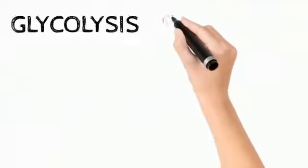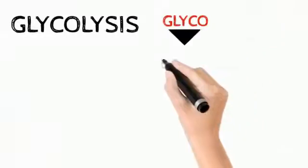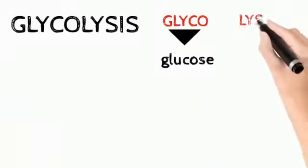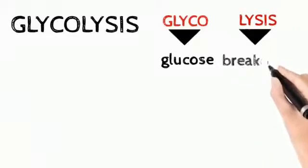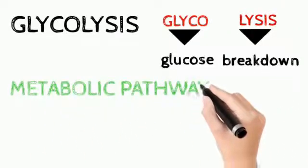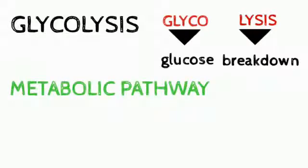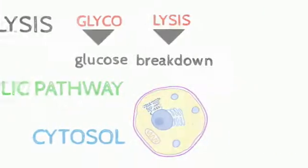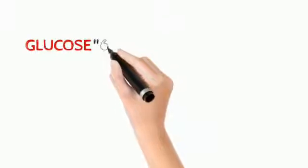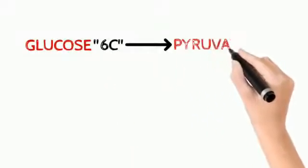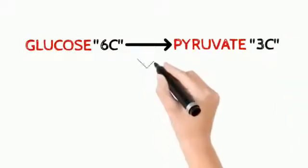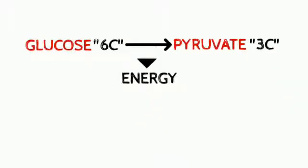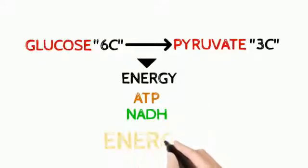Today we will study about the process of glycolysis. Glycolysis is made up of two words: glyco, representing glucose, and lysis, which means breakdown. Glycolysis is a metabolic process that involves the systematic breakdown of glucose to produce energy. The process takes place inside the cytosol of the cell. One molecule of glucose, a six-carbon compound, is converted into two molecules of pyruvate, a three-carbon compound, releasing energy in the form of ATP and NADH. Pyruvate formed here is utilized further in different energy pathways producing more energy.